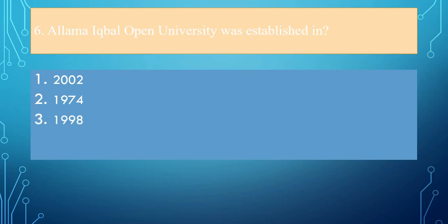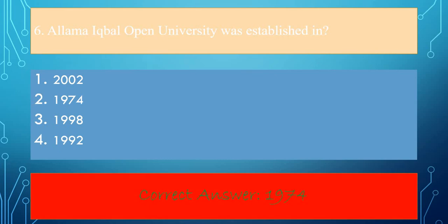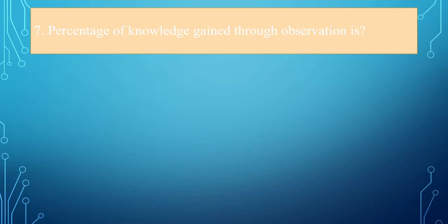Question number 6: Allama Iqbal Open University was established in 2002, 1974, 1998, or 1992? The answer is 1974.